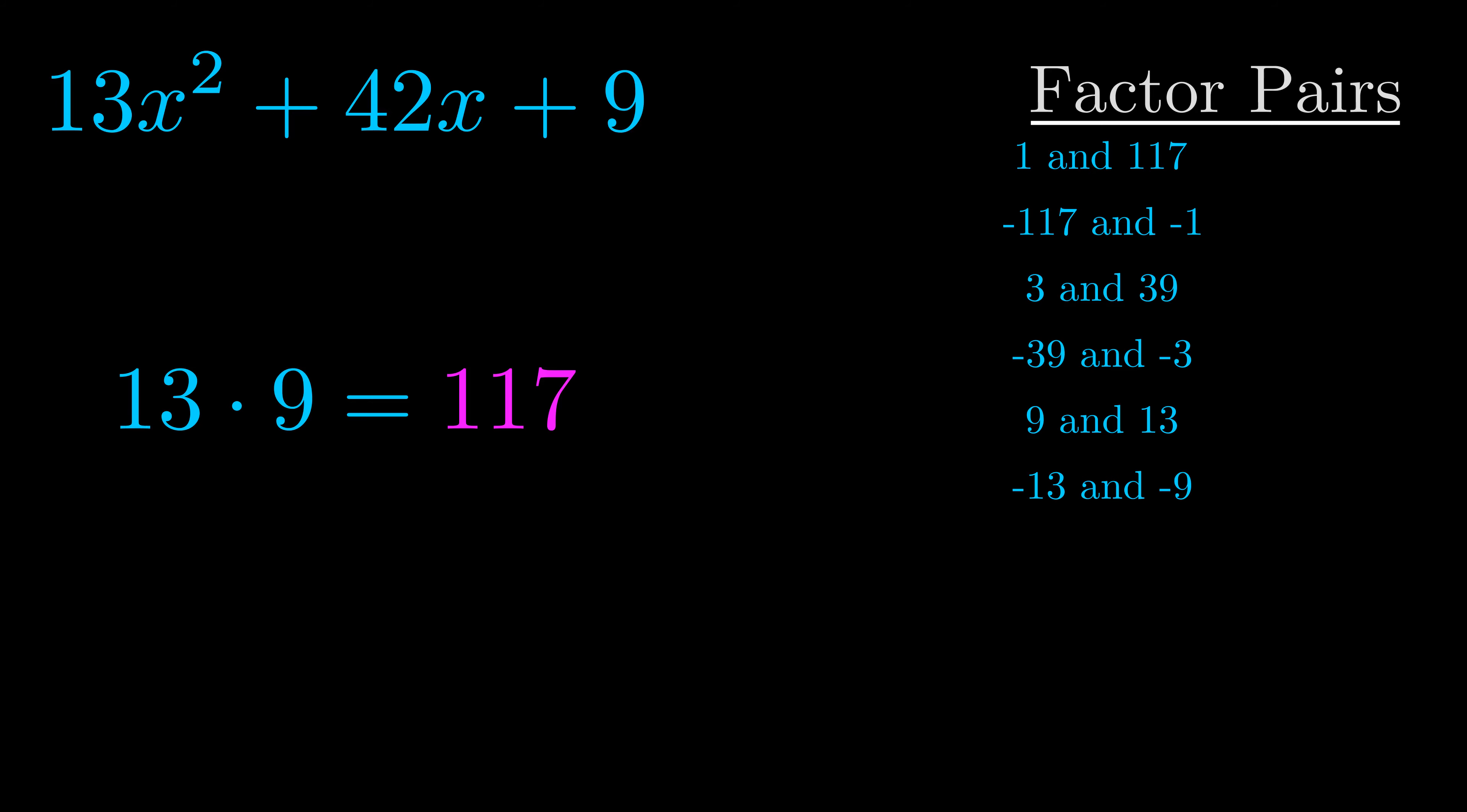The b value is the coefficient on the x term. That's the middle term, the one that we haven't done anything with yet. And really this is the only factor pair that we need.